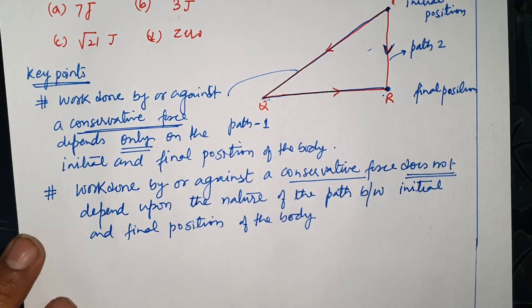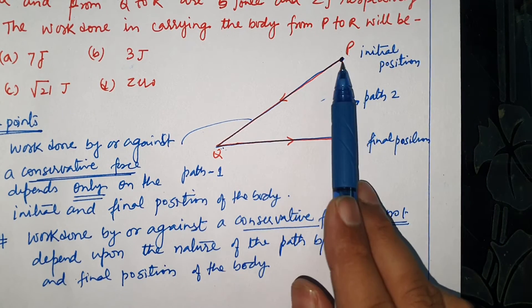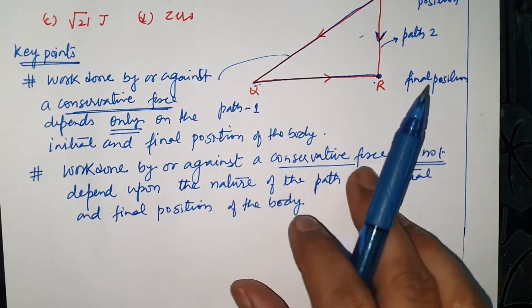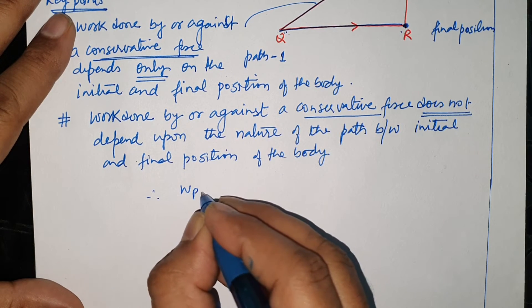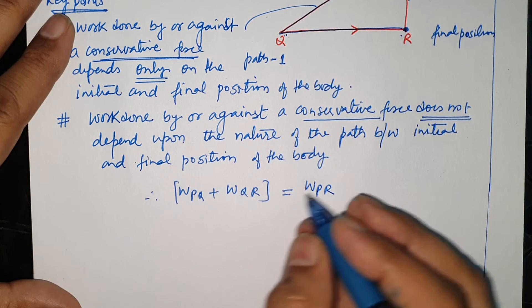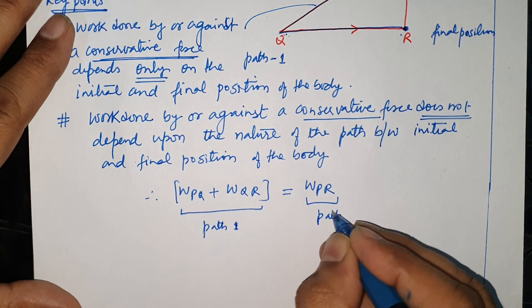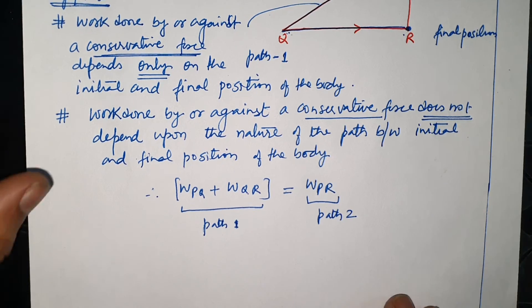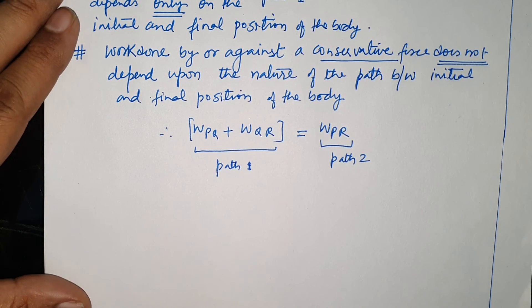In dono points ke aadhar par dekho — Path 1 mein work done aur Path 2 mein work done dono barabar honge, kyunki dono ka initial point aur final point same hai. Work done path se independent hota hai. Isliye: W(P to Q) + W(Q to R) = W(P to R). Yeh Path 2 ke liye hai aur yeh Path 1 ke liye, aur dono barabar hain kyunki work done initial aur final position par depend karta hai.